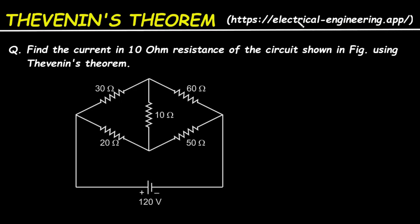The link of this website is in the bio of this channel and also in the description. Now, the question: find the current in the 10 ohm resistance of the circuit shown in the figure using Thevenin's Theorem. Here, we have to find the current through this 10 ohm resistance by using Thevenin's Theorem.